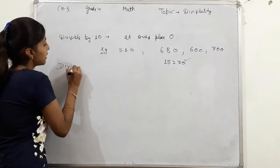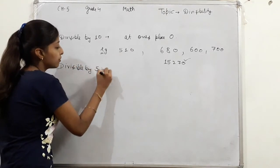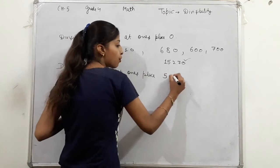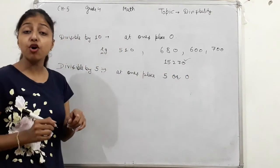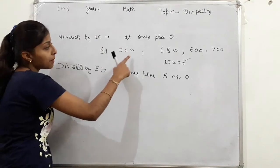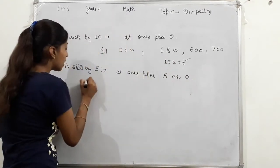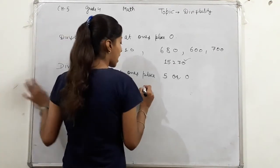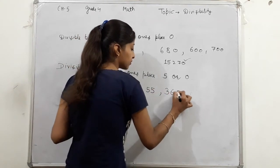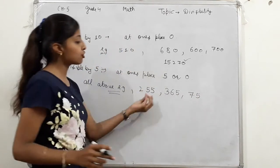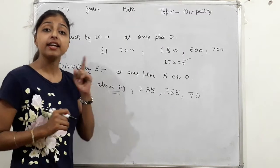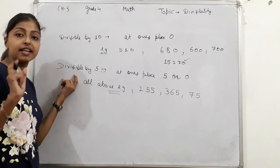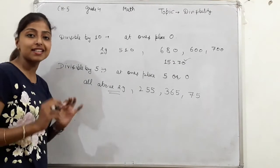Next, divisible by 5. What should be at once place? 5 or 0. Either 5 or 0. All above examples also divide by 5. And besides this, if I take 155, 365, 75 - what is here? Once place has 5. So these numbers also divide by 5. You can also check previous video to understand this. I have explained it very well there.